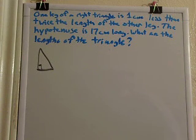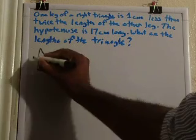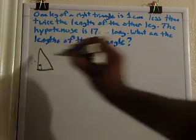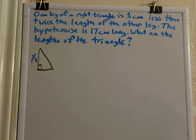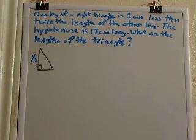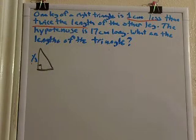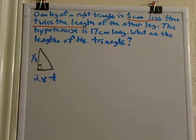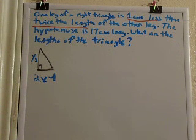I know that one leg of the right triangle is one centimeter less than twice the length. So I'm going to pick a side to represent the leg of one side of this triangle. In this case, I'm going to use X. Let me get another color real quick. So I'm using X. And because the problem says that the other side is one centimeter less than twice the length, we're going to let the other side represent 2X minus 1. Minus 1 for one centimeter less, 2 for the twice.